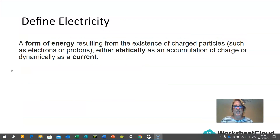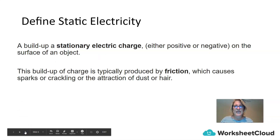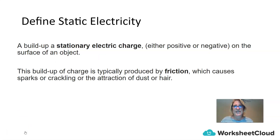If we have to define electricity, we will say that it is a form of energy resulting from the existence of charged particles, such as electrons or protons, and that this electricity is either created statically, which is an accumulation of charges, or dynamically as a current. In this lesson, we are going to focus on static electricity.